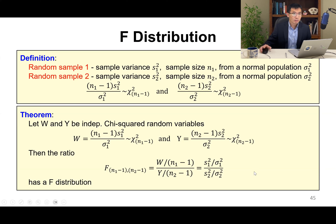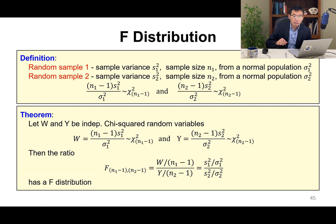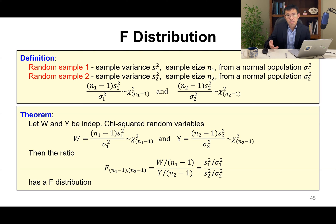This gives us a way to use the F distribution to compare the ratio of two sample variances and determine which one is larger. Later in two-sample test problems, when we want to compare sample variances, we are going to use this F distribution.